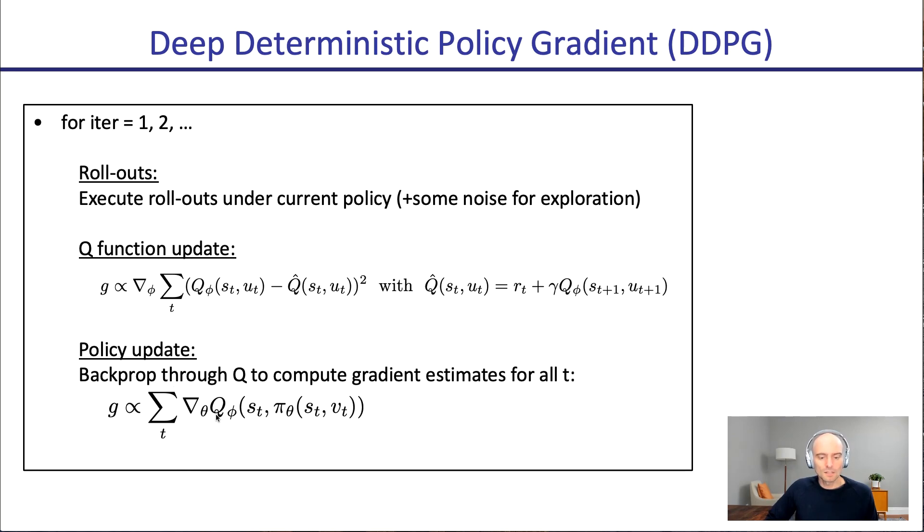And then we update the policy. So in regular Q learning, you just keep track of a Q function, but here we also have a policy and the policy is optimized as follows. You can look at the Q function at each state that we encountered, and then there's an action we can take. This action will be chosen by the policy. We want to optimize the policy such that if we apply the policy at the states where we've collected samples, then the Q function will predict that we'll achieve a high value. So what is this saying? It's saying optimize your policy to shift the weight or shift the actions towards actions that have high Q values.